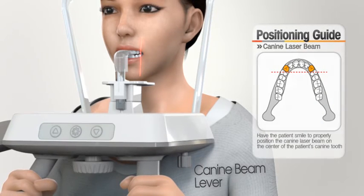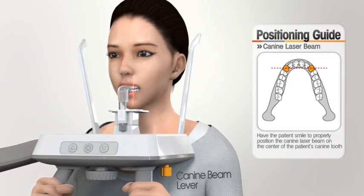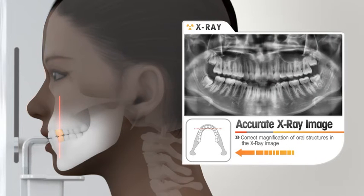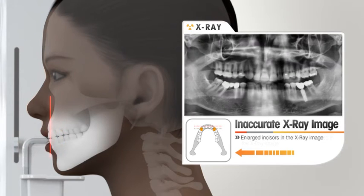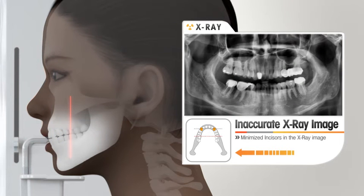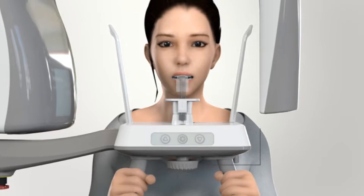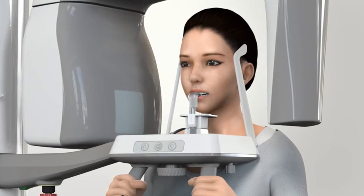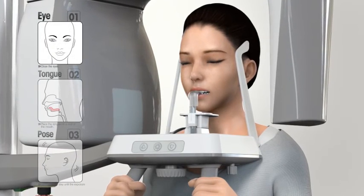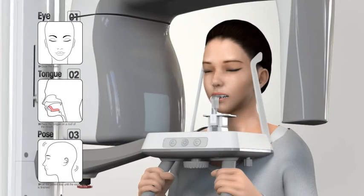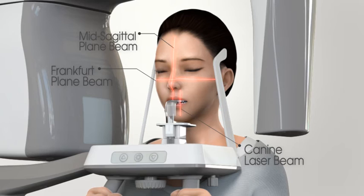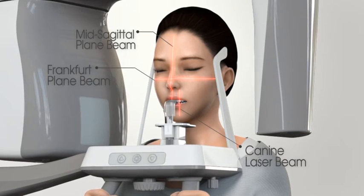Match the canine laser beam at the center of the patient's canine teeth by adjusting the canine beam lever. If the location of the canine beam is off the patient's canine position, the incisor image can be incorrectly magnified — meaning reduced or enlarged incisor images are achieved by incorrect capture layer. When everything is ready, rotate the temple support wheel to tighten the temple support to stabilize the patient. During image capturing, ask the patient to close the eyes and place the tongue to the hard palate. Instruct the patient not to move until image capturing is completed. Confirm that all three beams are placed appropriately before capturing the image.